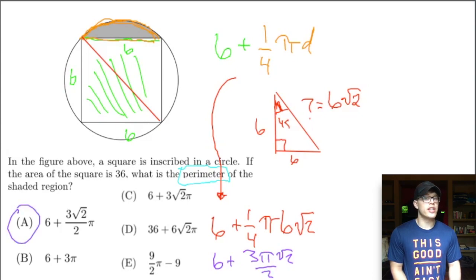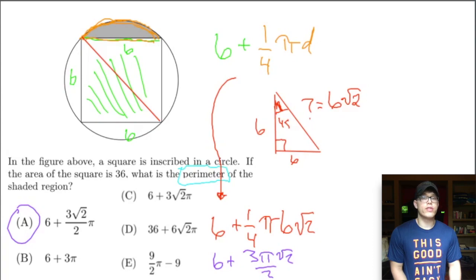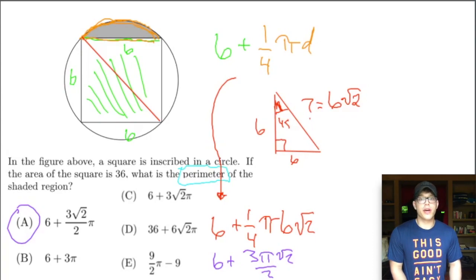The answer is A. Looking at the other answer choices, they represent common mistakes — for example, if you forget to divide by 2 that gives you C. The answer choices are always designed around typical errors people make.